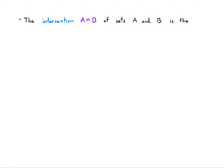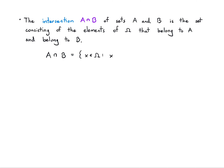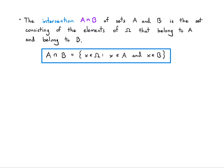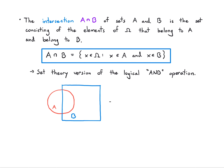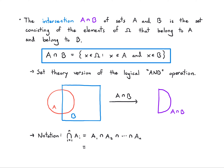The intersection, A intersect B, of sets A and B is the set consisting of the elements of the universal set that belong to A and belong to B — you have to be in both in order to be in the intersection. So A intersect B = {x : x is in A and x is in B}. This is a set theory version of a logical AND. Similarly, the intersection from i=1 to n of Ai gives the elements in the universal set that belong to A1 and A2 and An simultaneously.